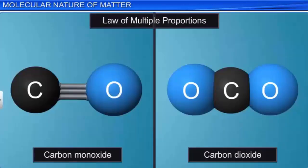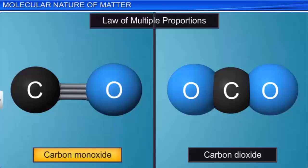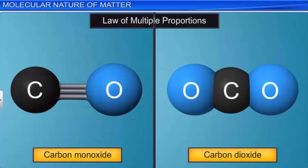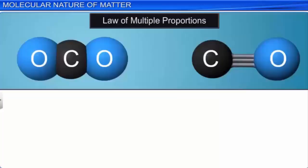For example, carbon and oxygen combine to form two compounds: carbon monoxide and carbon dioxide. If M1 is the mass of oxygen that combines with M units of carbon in carbon monoxide, and M2 is the mass of oxygen that combines with M units of carbon in carbon dioxide, then according to the law of multiple proportions, the ratio M1 to M2 is a simple ratio of small integers.